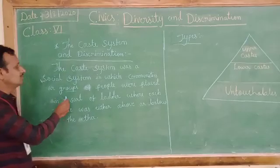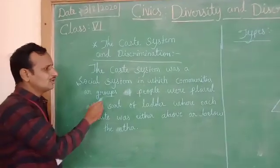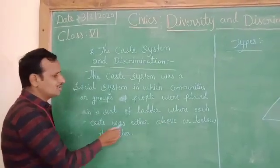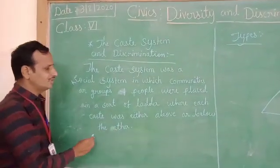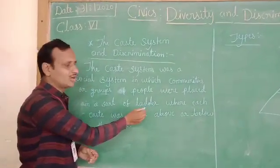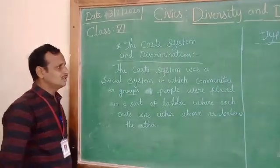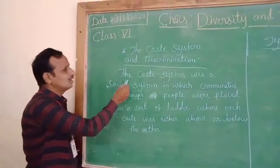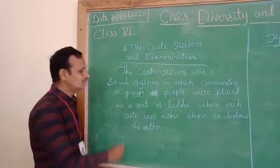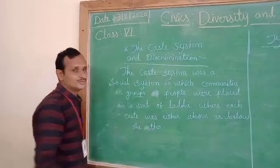Here is the definition of the caste system: the caste system is a social system in which communities or groups of people were placed in a sort of ladder, where each caste was either above or below the other. Here the meaning of 'ladder' means arranging in order, or ranking.